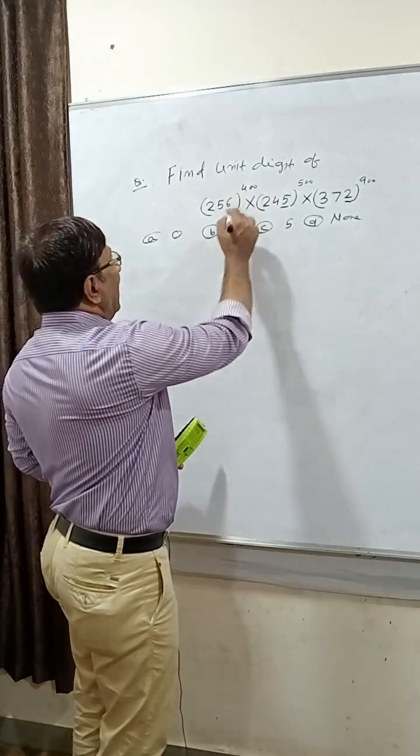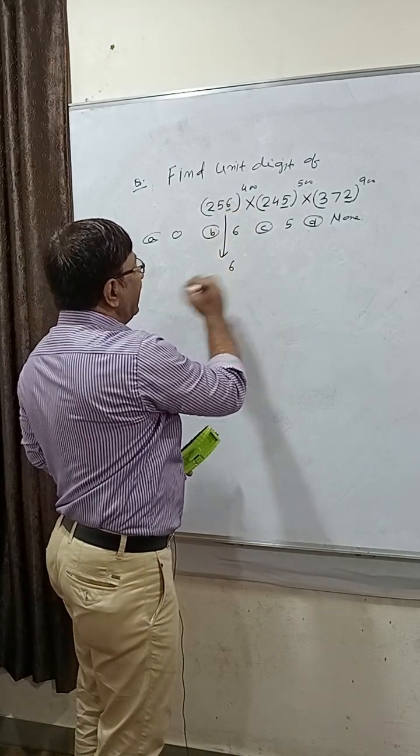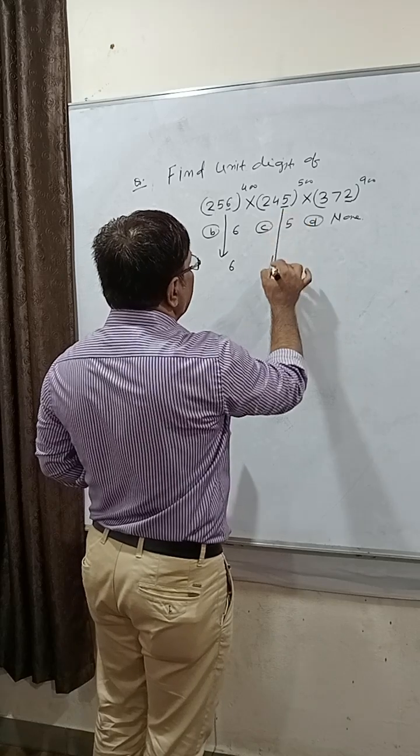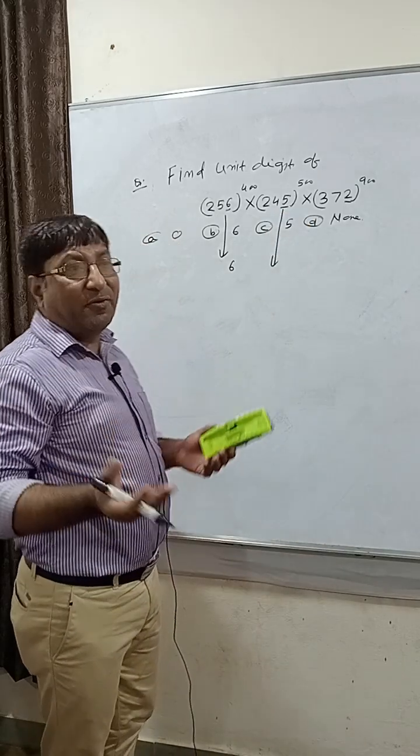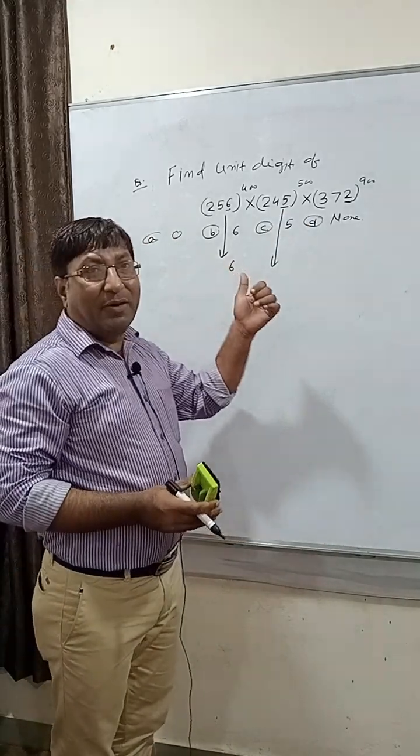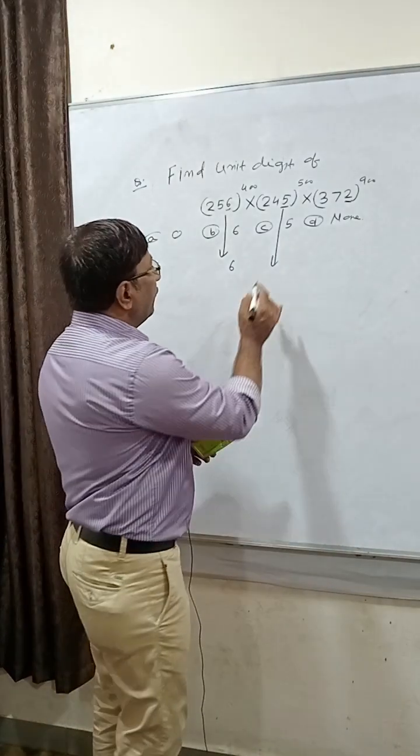And here unit is 5. So when we take any number of time multiply those numbers which have unit 5, we get only 5. So from this two we can find 6 into 5 equals 30.